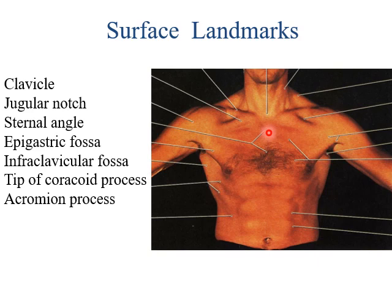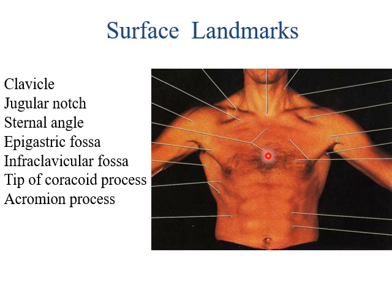At the level of the sternal angle, you can feel the second rib. So the sternal angle is the landmark for the second rib. Inferior to the sternum, just below it, there is another depressed area called the epigastric fossa.